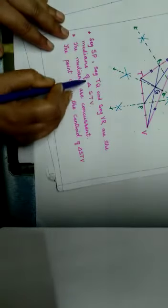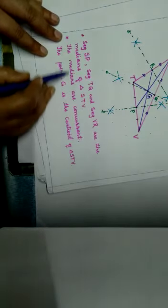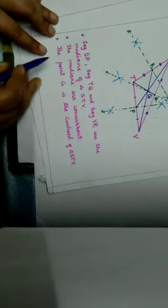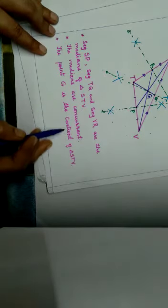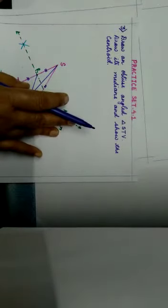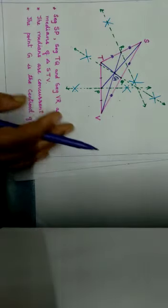Write down the answer: segment SP, segment TQ, and segment VR are the medians of triangle STV. These medians are concurrent. The point G is the centroid of triangle STV. In this way question number 3 of practice set 4.1 is finished. Practice questions 1, 2, and 3 at home. Thank you.